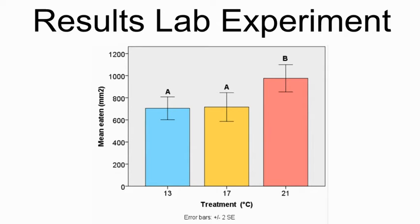We used the Scheffé post hoc test to determine which treatments were significantly different from the others. Only the snails from the 21 degrees Celsius treatment ate significantly more from their leaf disks than the snails of the other two treatments. Therefore, we assume that a tipping point of the temperature effect lies between 17 and 21 degrees Celsius.